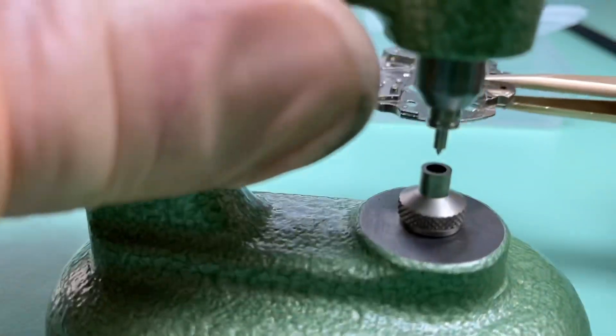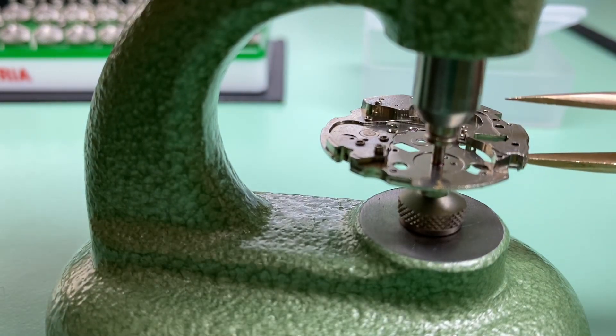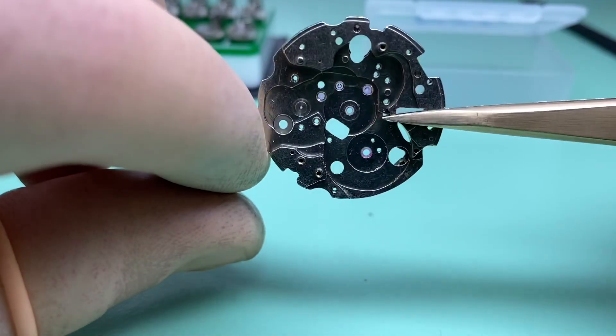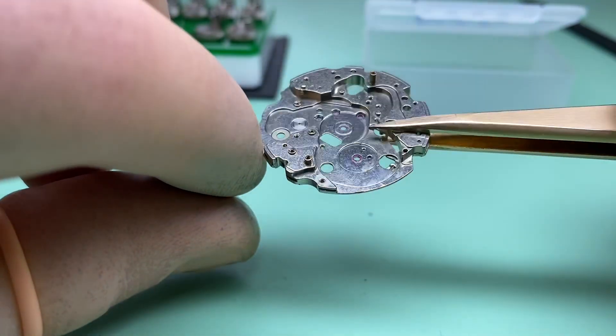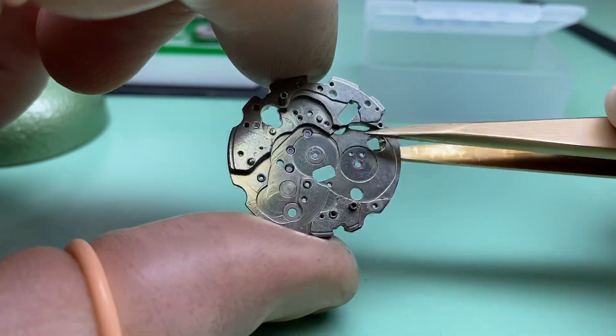I'm actually just going to push that down a little further because I know from experience that it's going to need to go down further for the end shake. But now we can see that jewel is nicely fitted in the movement and we've completed the barrel upgrade of the main plate.